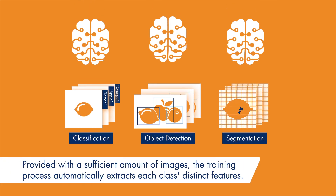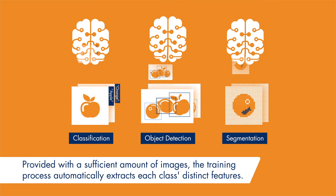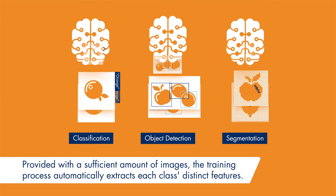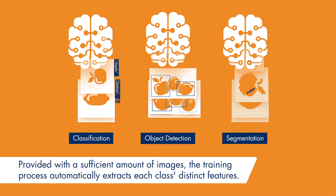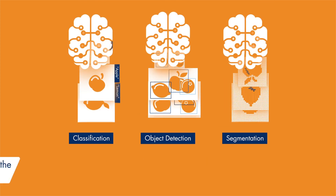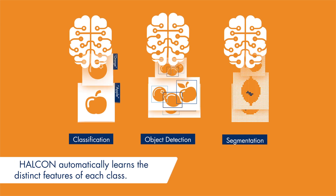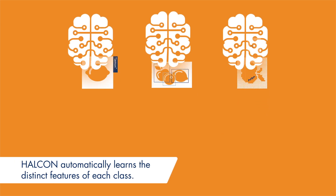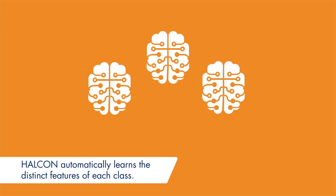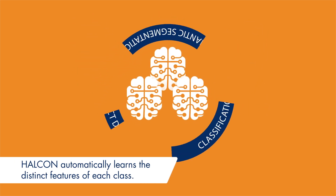Training is done simply by providing a sufficient amount of properly labeled training images. Hauken then analyzes these images and automatically learns which features can be used to identify the given classes.